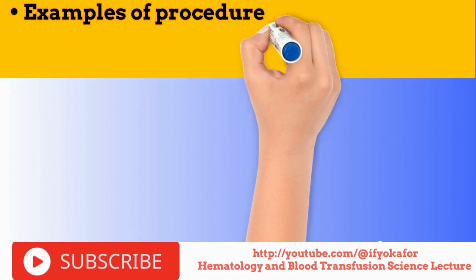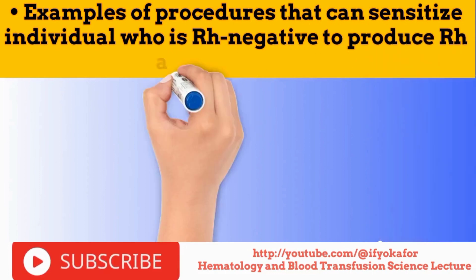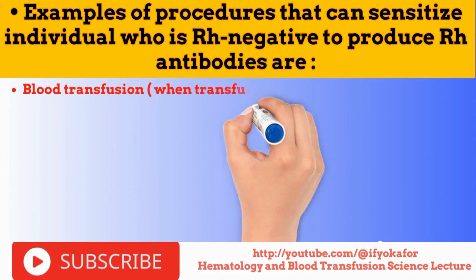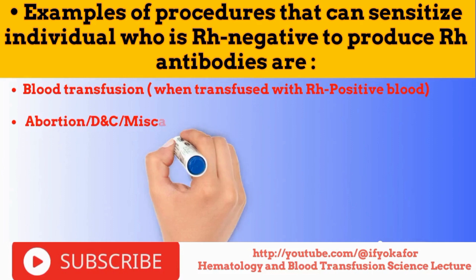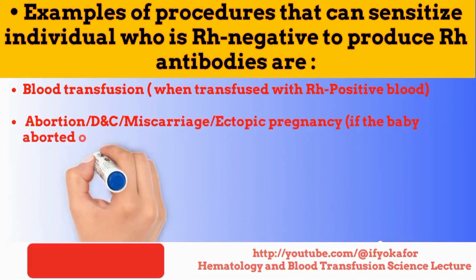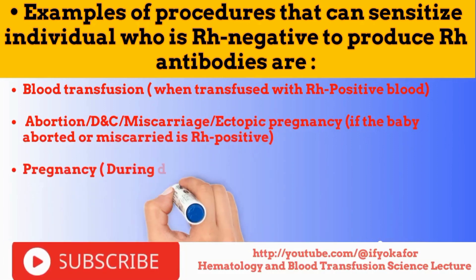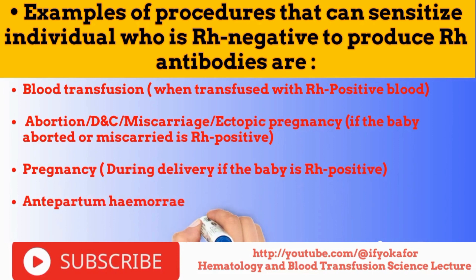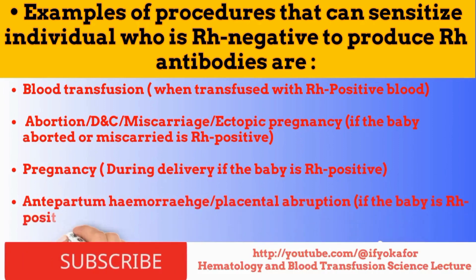Examples of procedures that can sensitize individuals who are ROH negative to produce ROH antibodies are: 1. Blood transfusion — if transfused with ROH positive blood; 2. Abortion, D&C, miscarriage, or ectopic pregnancy — if the baby aborted or miscarried is ROH positive; 3. Pregnancy during delivery — if the baby is ROH positive; antepartum hemorrhage or placental abruption — if the baby is ROH positive.